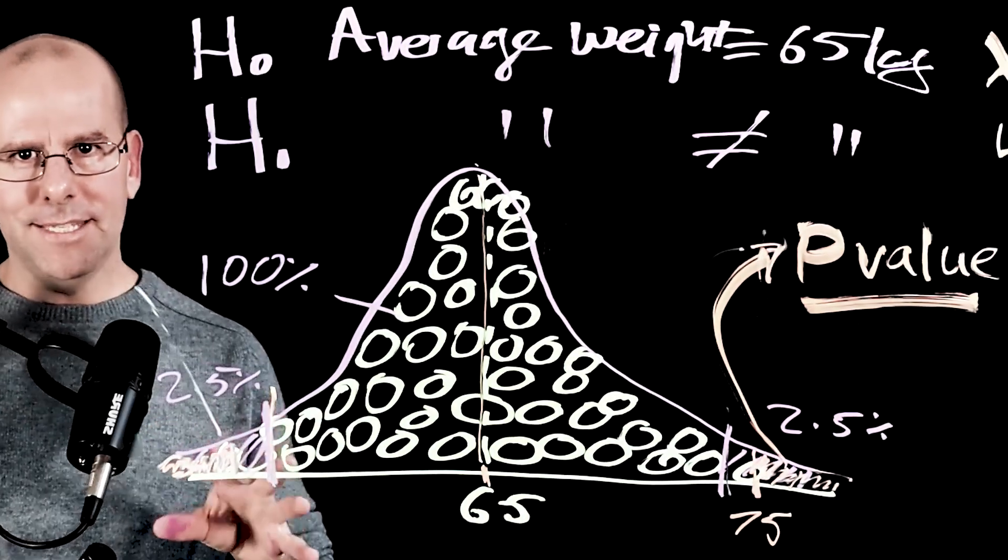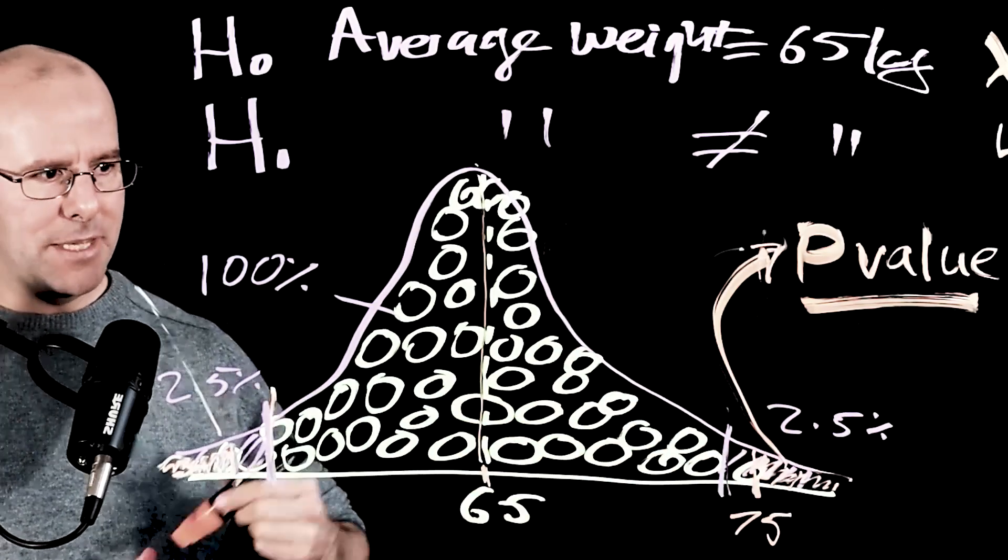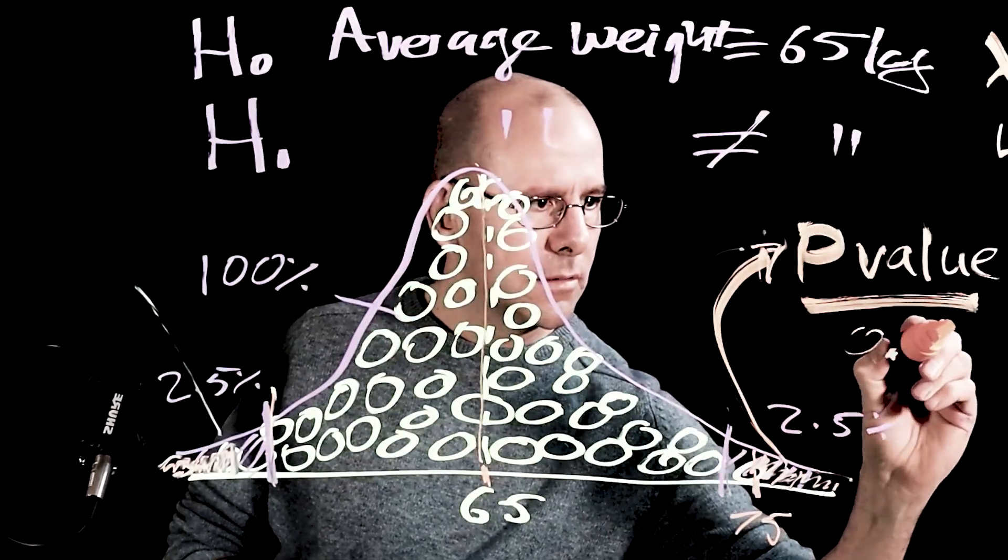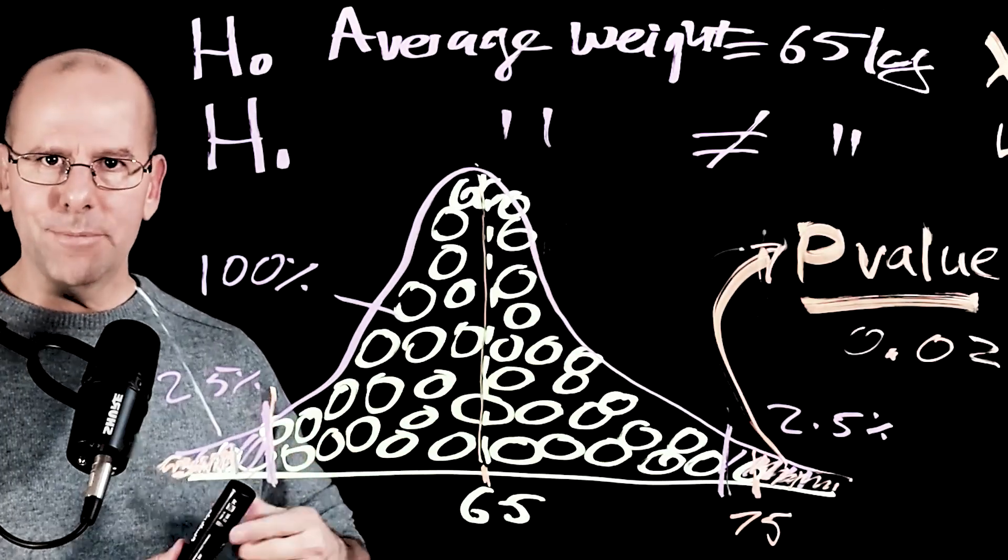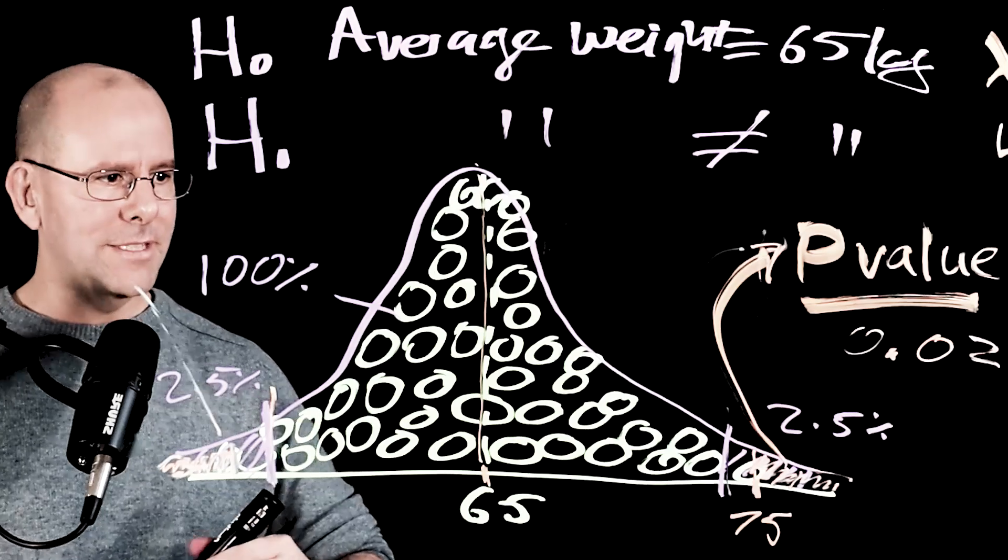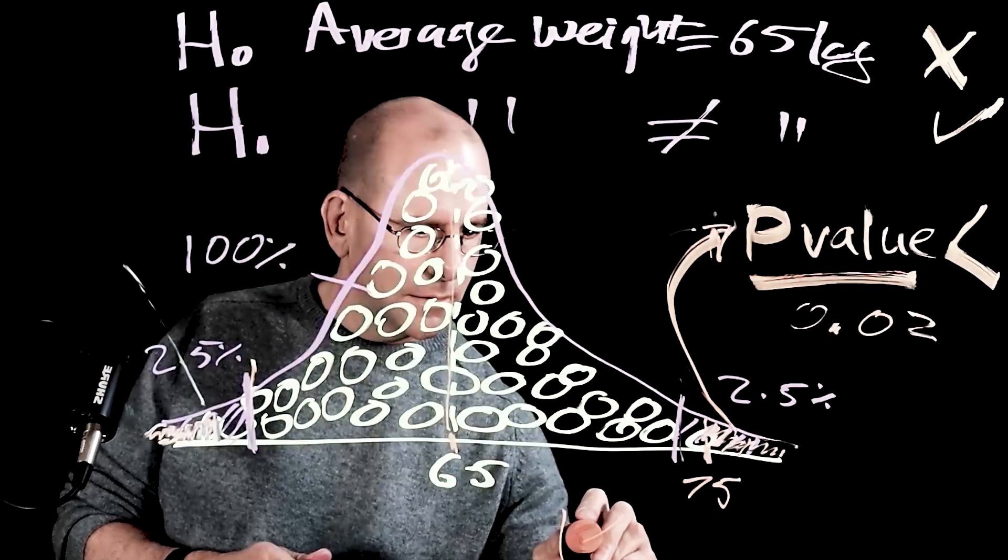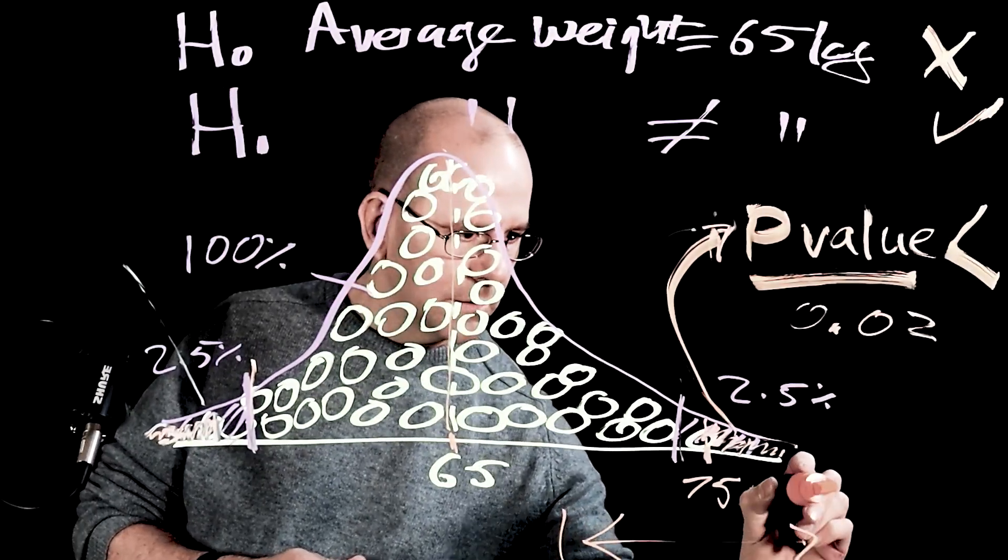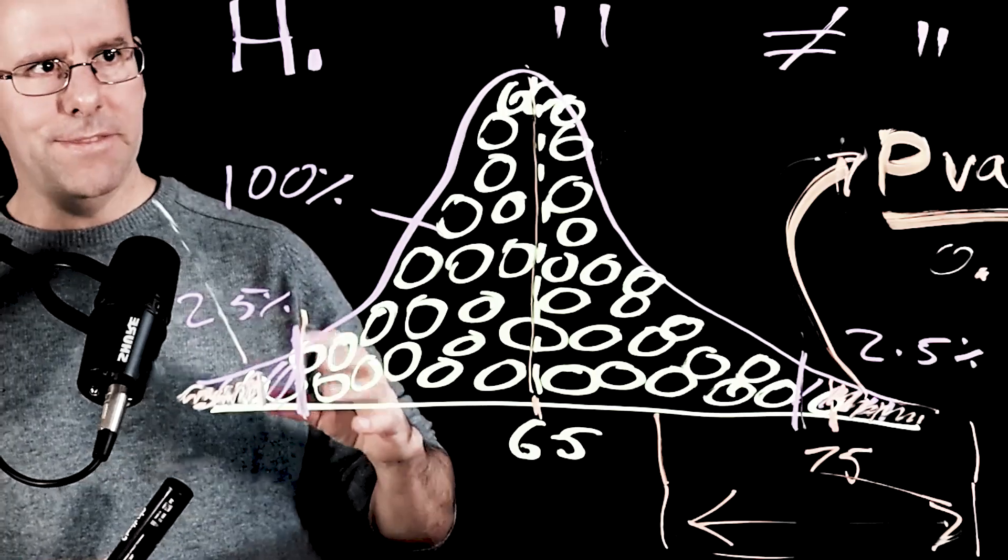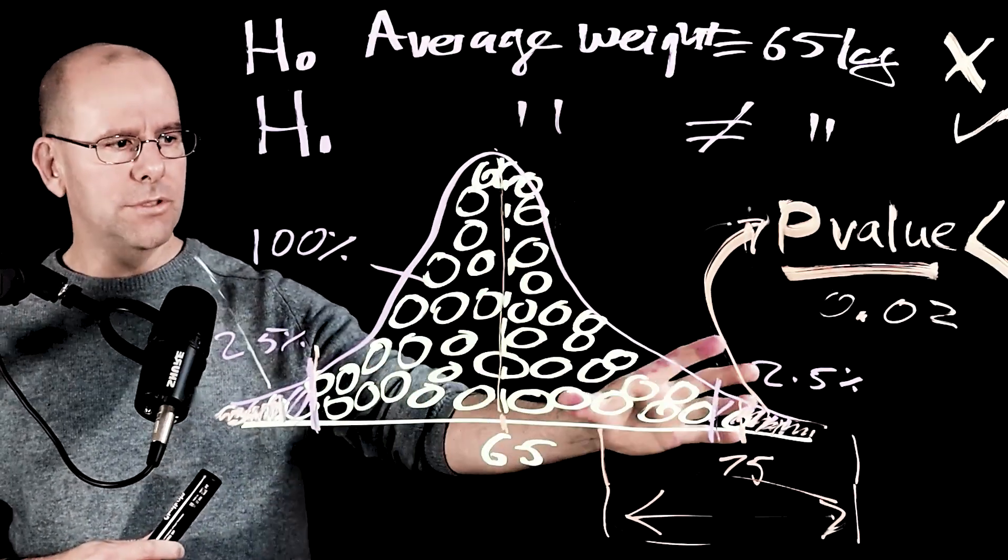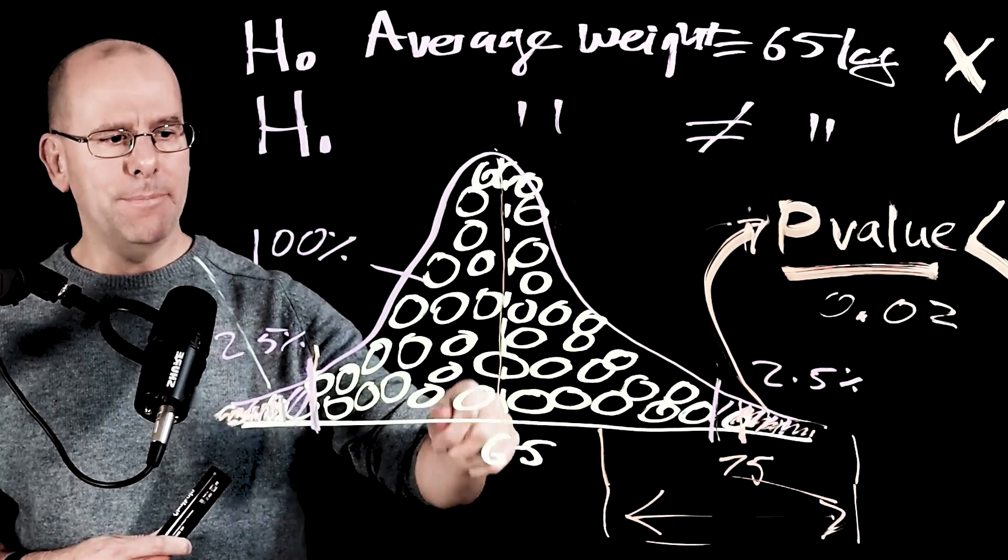And finally, when we do these statistical tests, we not only discover that this particular value that we got in our sample has a p-value of, let's say in this case, 0.02. But the other thing that we get from the statistical test is a 95% confidence interval. So in this case, it's 75 and we might say that we are 95% sure that the true average weight of men in Ireland falls within a particular range. And in this particular case, we know that that range will not overlap with 65.